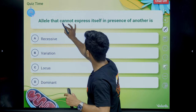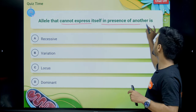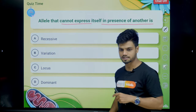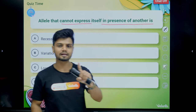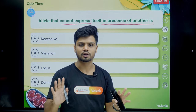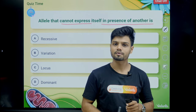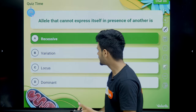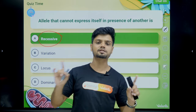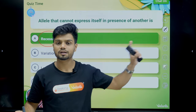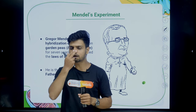An allele that cannot express itself in the presence of another allele is called a recessive allele, because a recessive allele cannot express when a dominant allele is present.